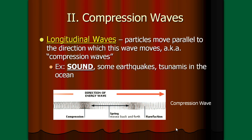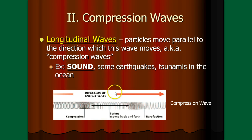So examples of compression waves — you really need to know these. Sound is the best example of compression waves that we know of. Some earthquake waves are compression waves, specifically the ones that go through the earth, not the surface waves — those are usually transverse. Sometimes tsunamis in the ocean can be propagated as a compression wave through the water. The reason why they're called compression waves is you have these areas of compression and these areas of what we call rarefaction.